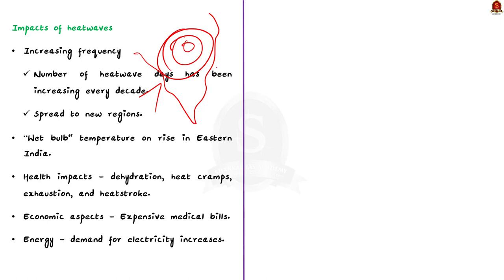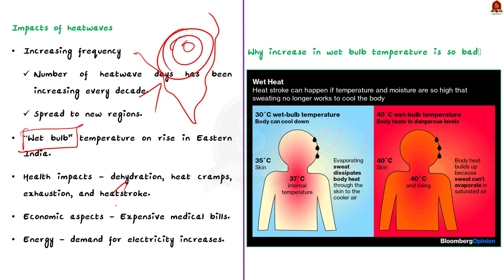Let us talk about the wet bulb temperature. In some parts of eastern India, the wet bulb is on the rise — the air becomes heavy and damp, making it harder for us to cool down, causing discomfort, dehydration, and in severe cases, even death. Our body has a self-cooling mechanism: sweating. When we sweat, the water evaporates due to the heat around us, since evaporation is a cooling process that absorbs heat from the surrounding and converts water to vapor. When the air becomes heavy and damp, this evaporation process does not happen. The wet bulb temperature measures the temperature at which water evaporates from a wet surface like our skin under specific humidity conditions.